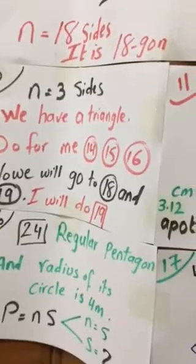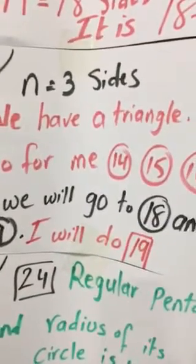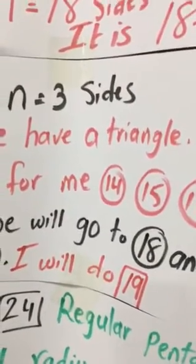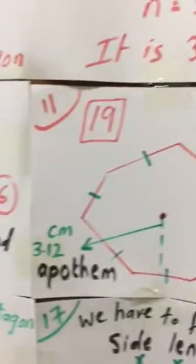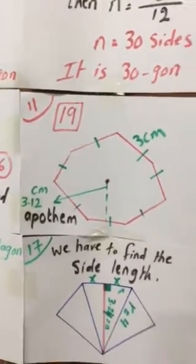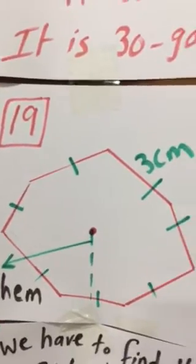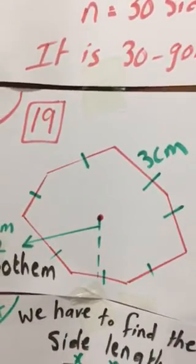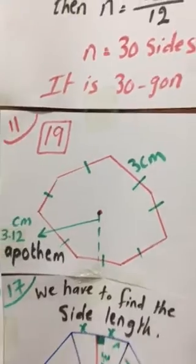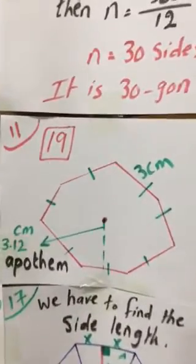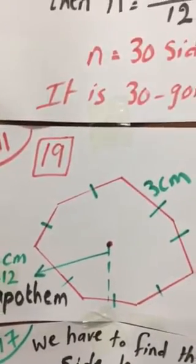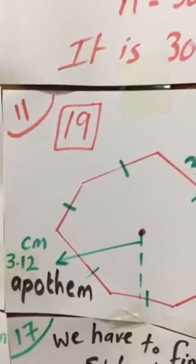Now we will go to number 18. I will do number 19 for you. As you see, number 19 is what is that polygon. Let me count the sides: 1, 2, 3, 4, 5, 6, 7. Yes, bravo excellent guys. Here we have, because we have seven, it is a heptagon.